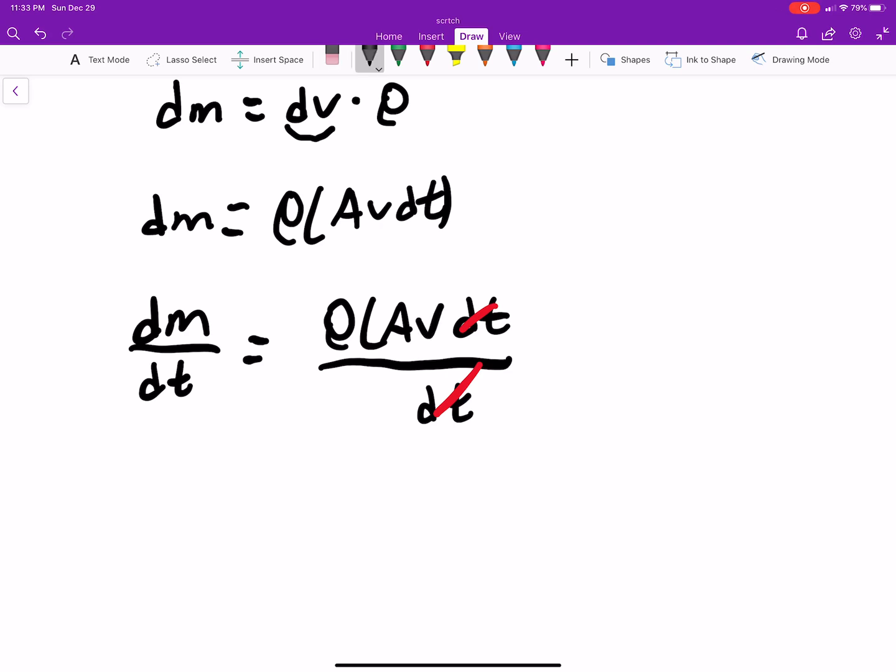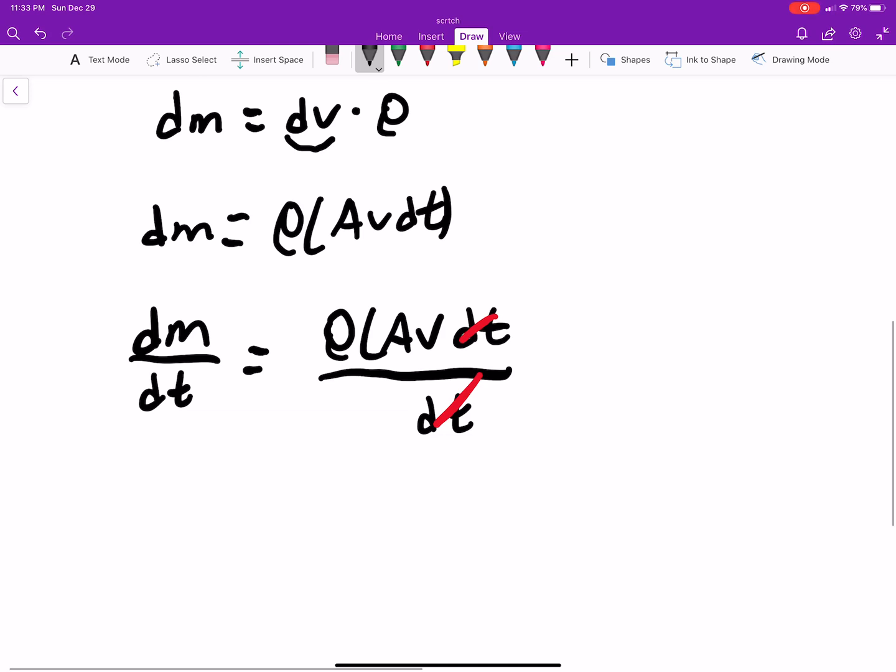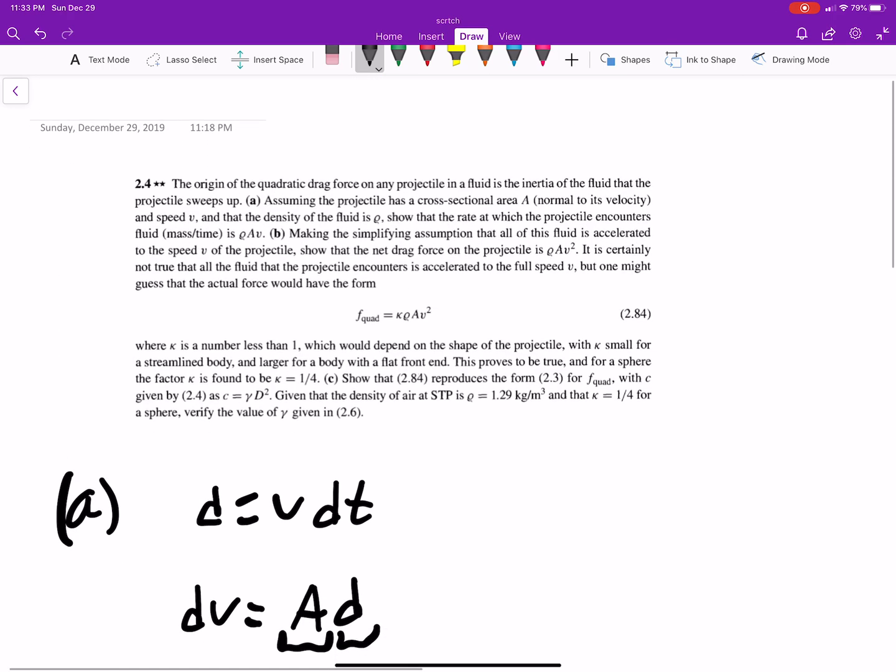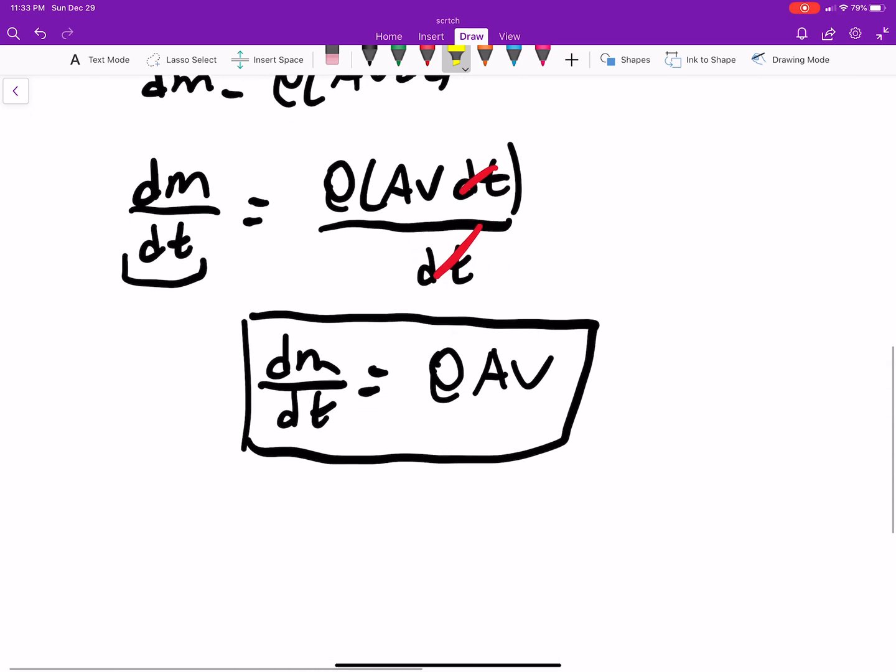So we did dM, which is all that, times just dt. There's nothing to replace there with. So dM by dt is just all this stuff, which is ρAV. That's part B. Part A, ρAV. Okay.